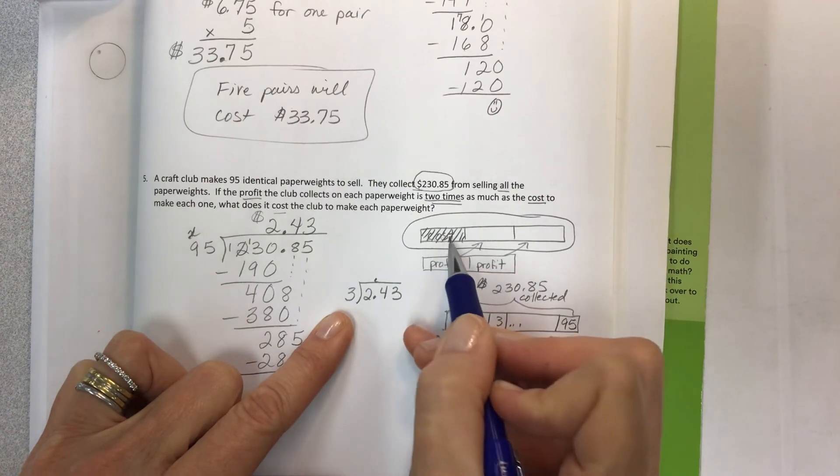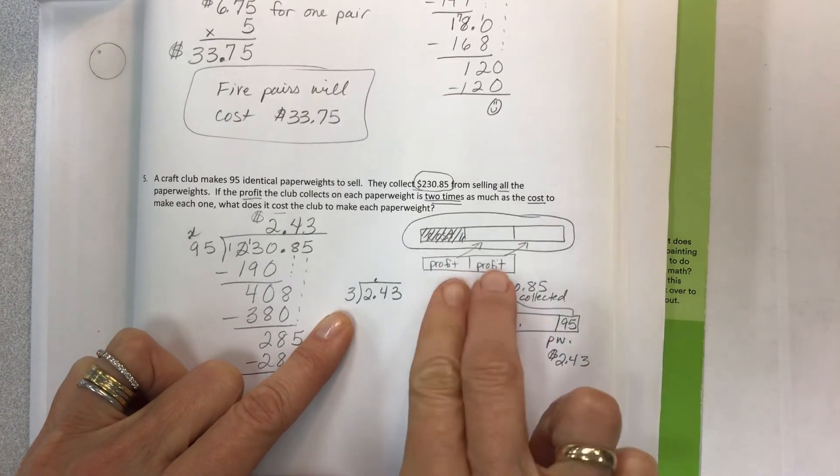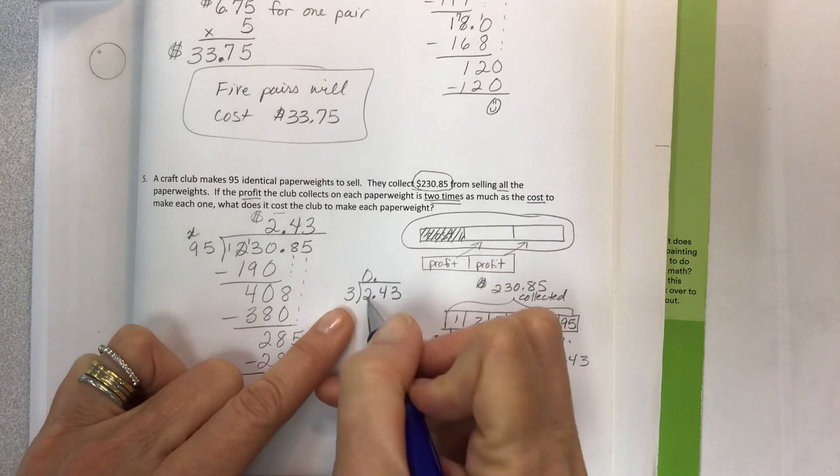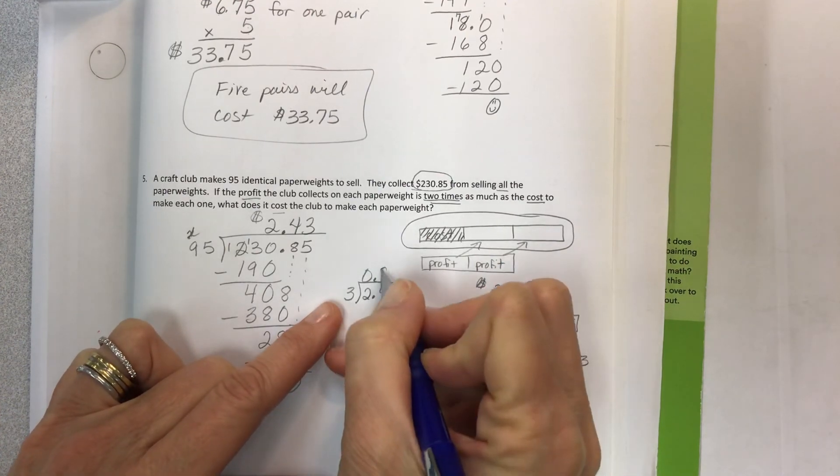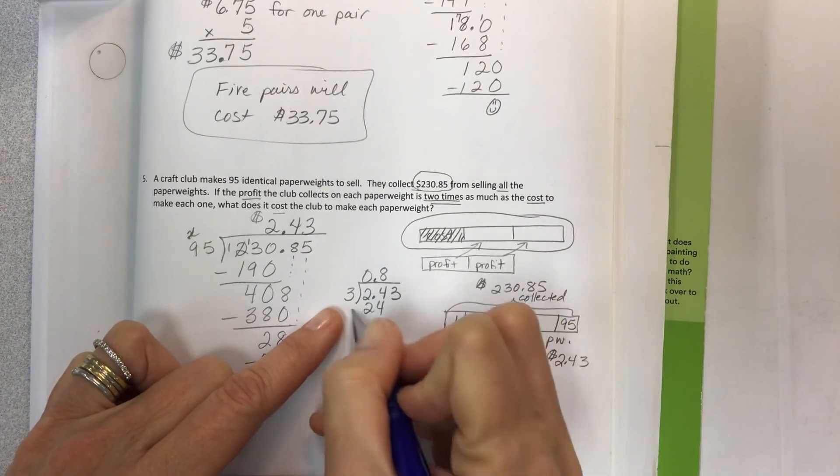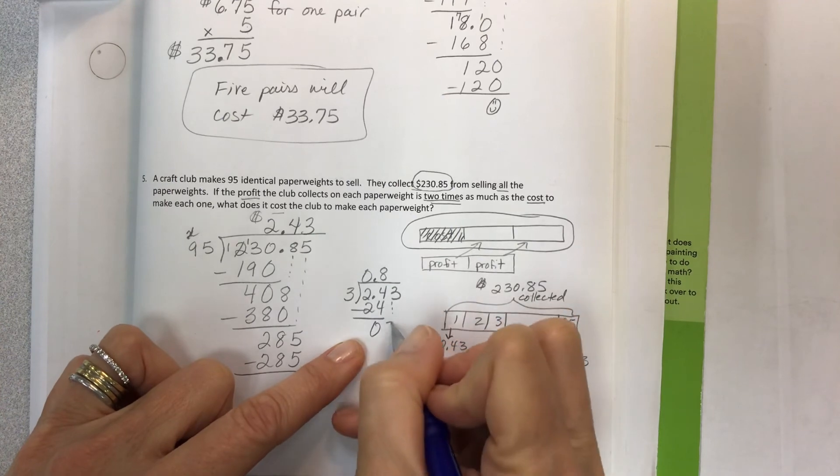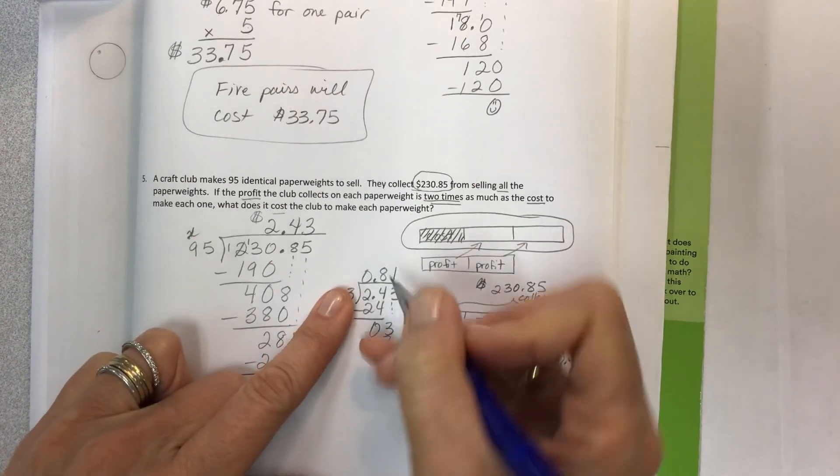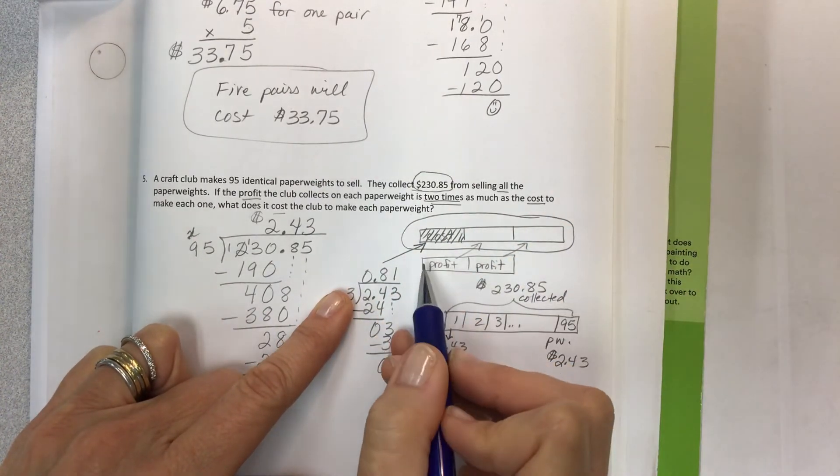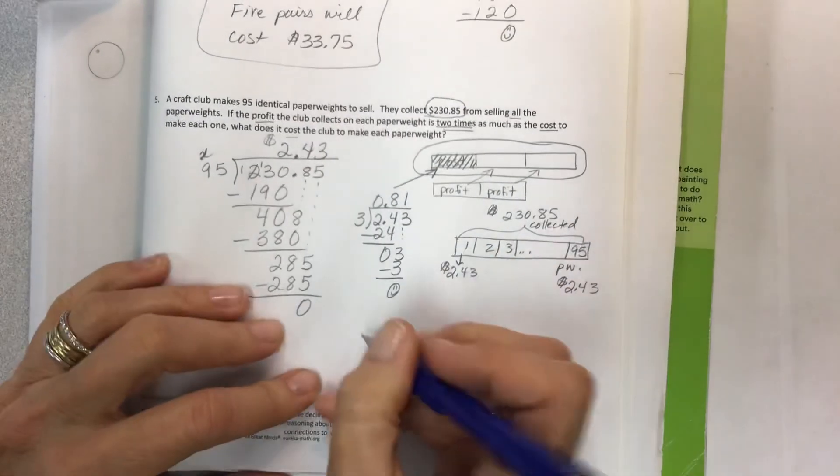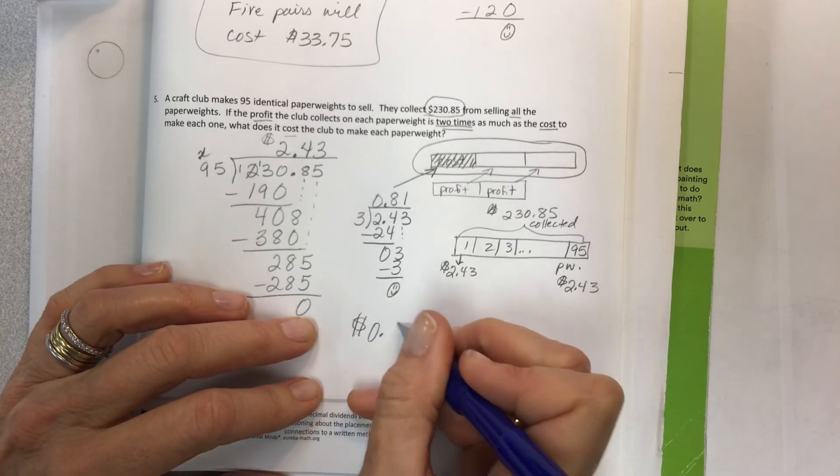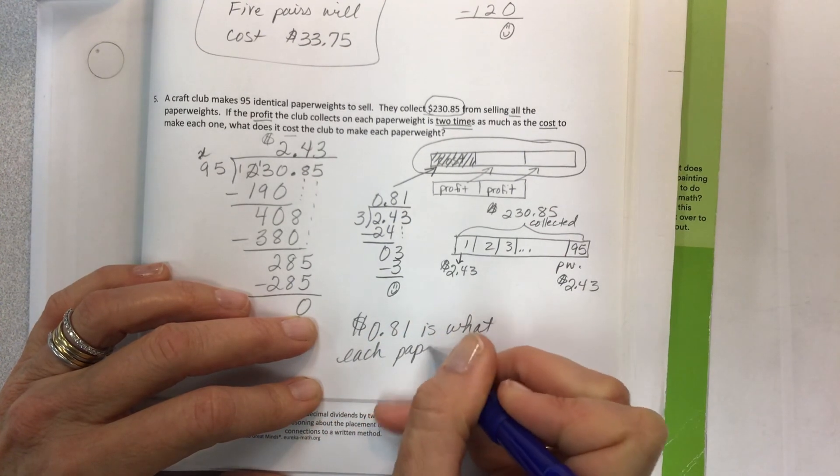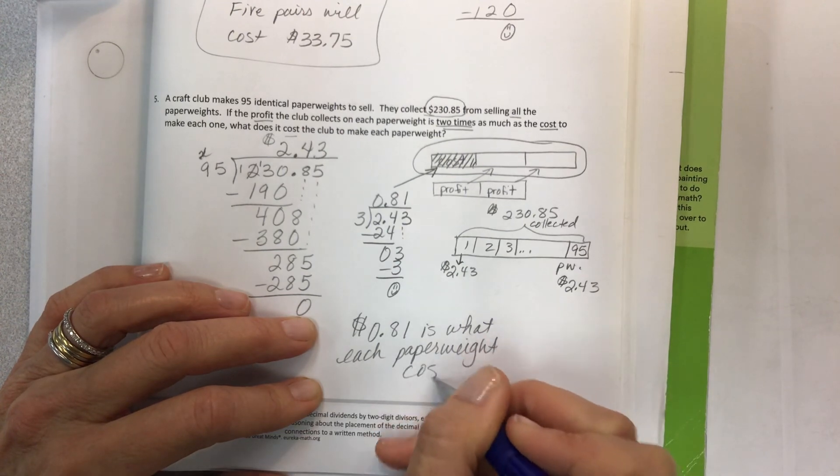$2.43 is now your dividend. Let's split it into three because I need to know the amount of one of those pieces. Two is not divisible by three, but 24 is. Three times eight is 24 with nothing left over. And then we have zero left over. So this amount is the cost for each paperweight. $0.81 is what each paperweight costs. Super tough there, but you've got it now.